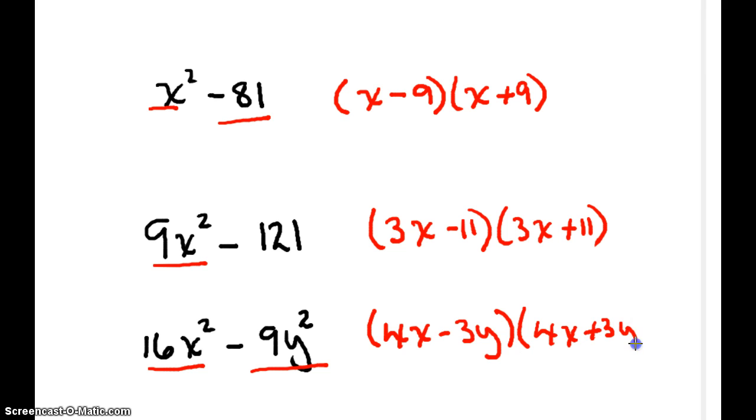How could you check this? Well, we could do the box method and see that my negative 3y times 4x and my positive 4x times 3y would eliminate each other. And all I would be left with is 16x squared and negative 9y squared.